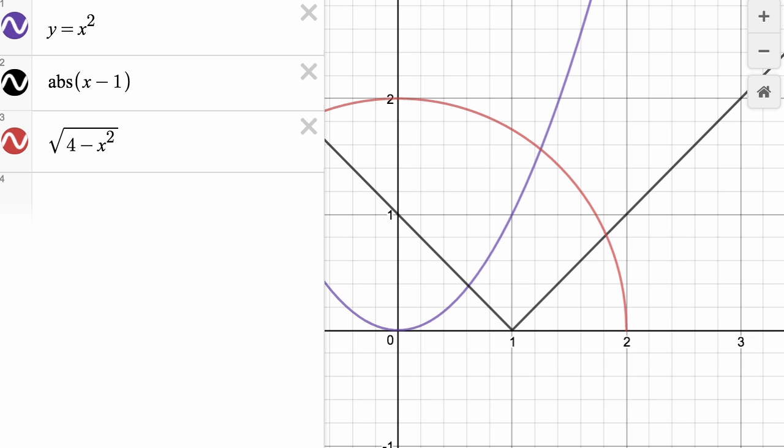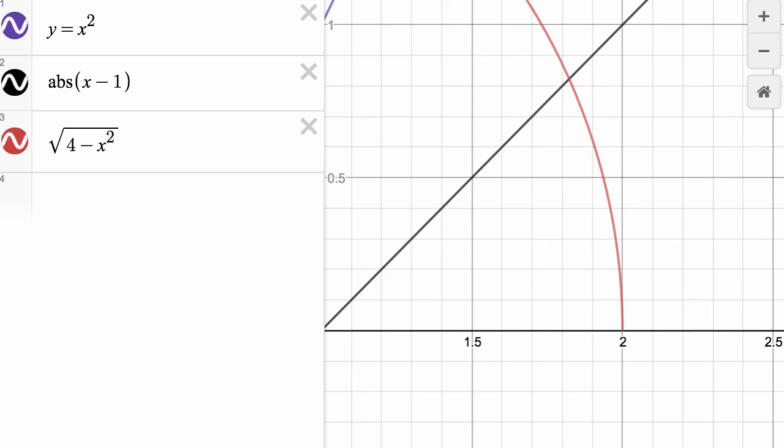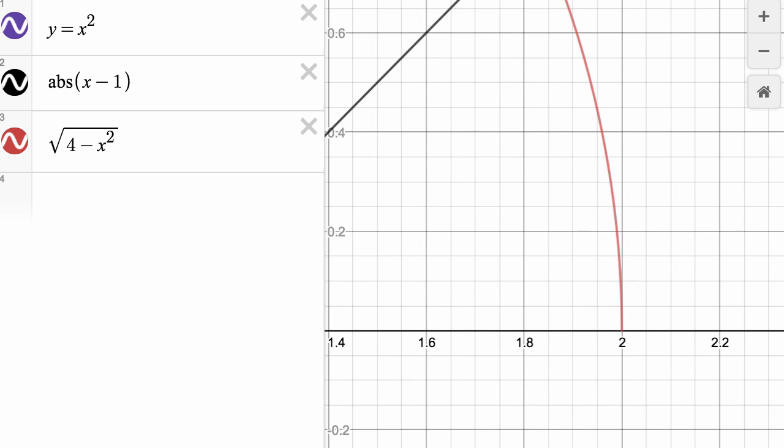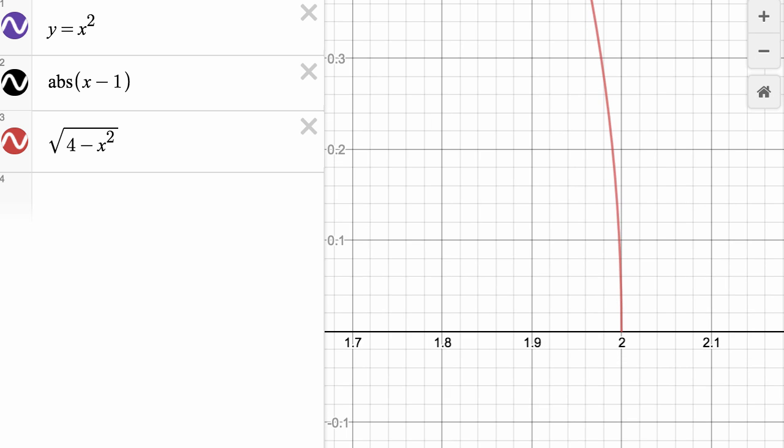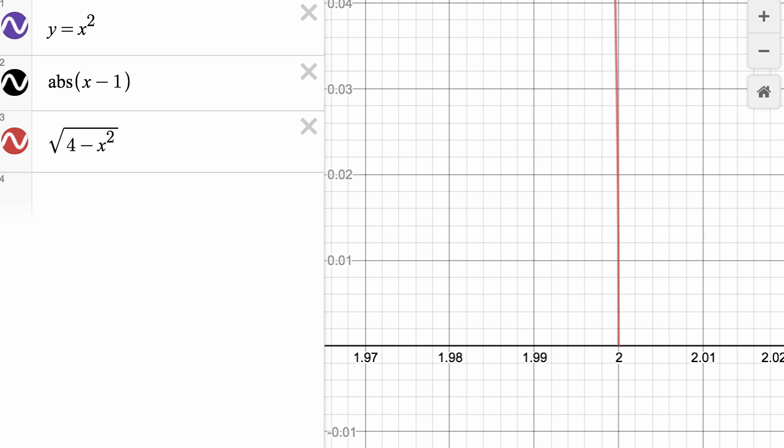And let's focus on the point two comma zero. Because right over there, we actually are not differentiable, and if we zoom in far enough, we see right at two comma zero that we are approaching what looks like a vertical line. So once again, we would not be differentiable at two comma zero.